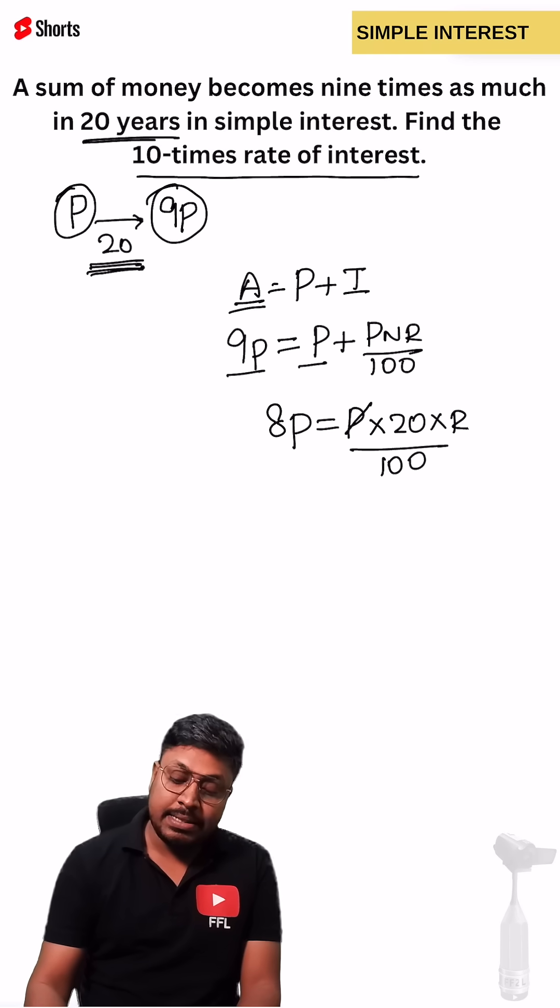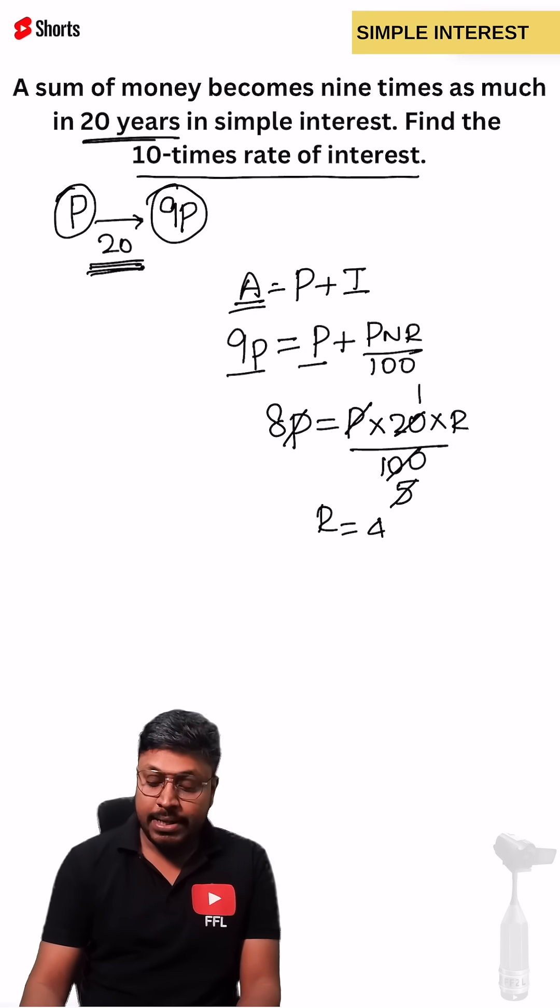So we can cancel this P and P here. Similarly, one time we can cancel this 5 times. So 8 into 5 will be 40. So rate of interest is 40 percentage.